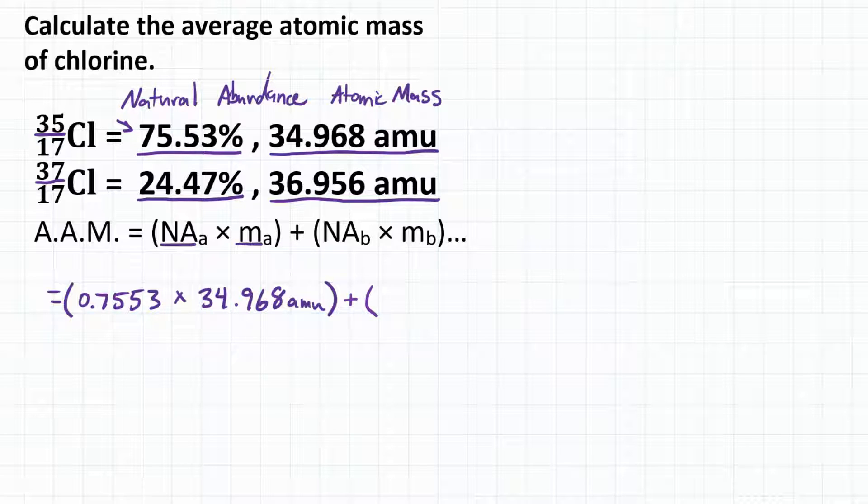chlorine-37. So the natural abundance is 24.47%. As a decimal, that would be 0.2447, and multiplied by the atomic mass, which is 36.956 AMUs.